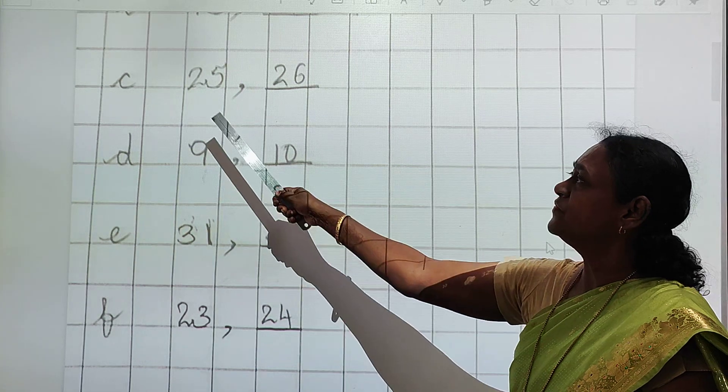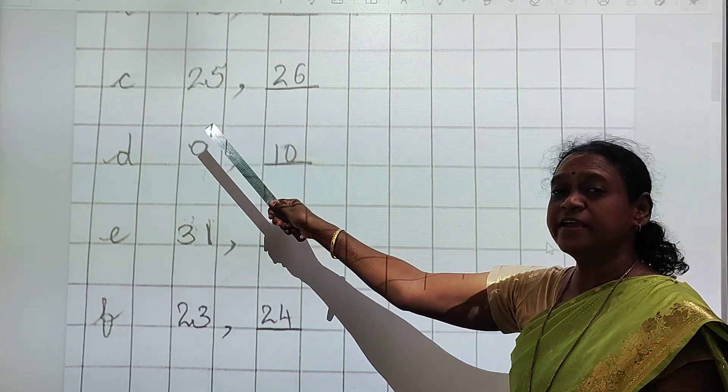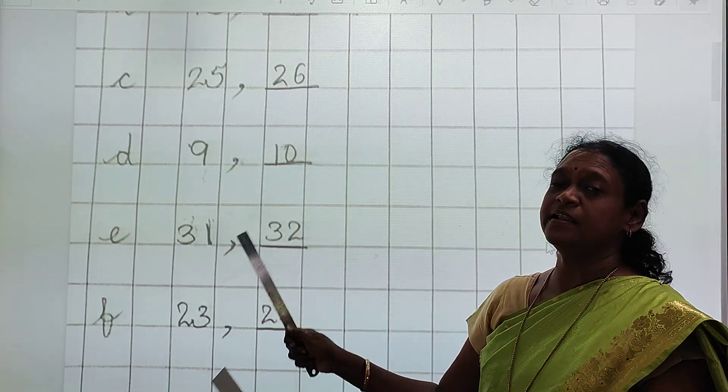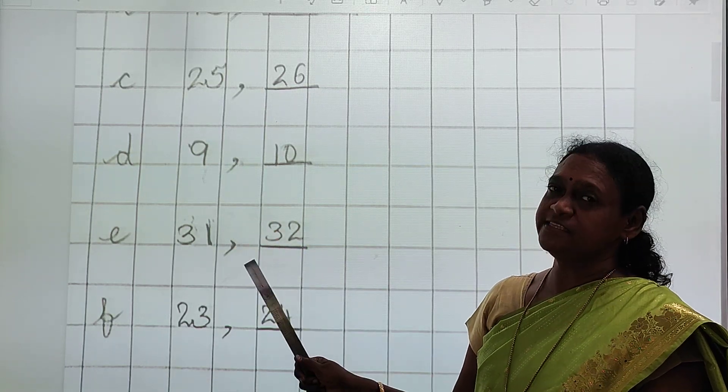Third number is 25. 25 ke baad kya aata hai? 26. After numbers karne ke liye aapko 1 se 50 ache se aana chahiye.